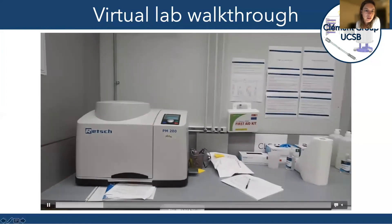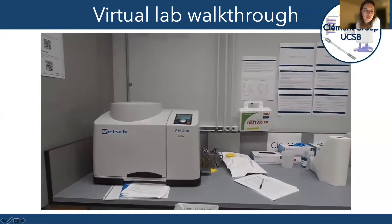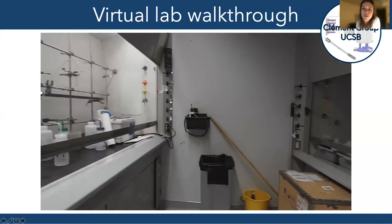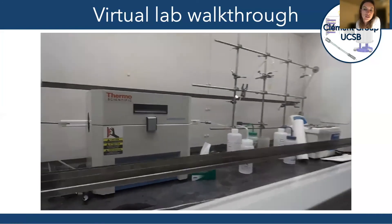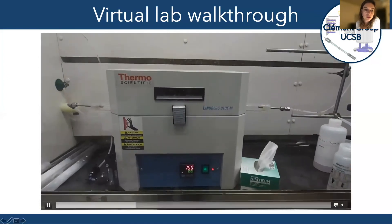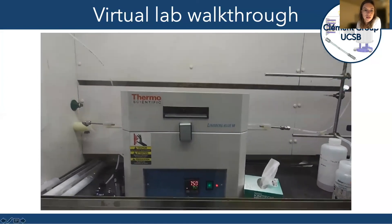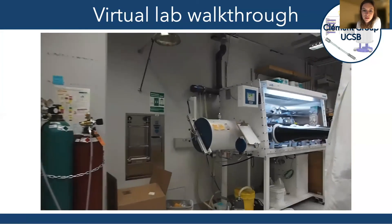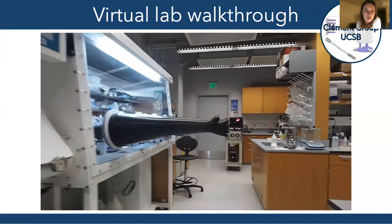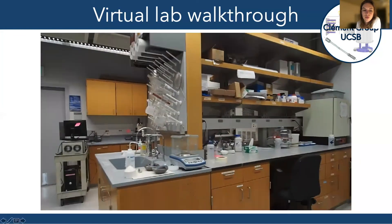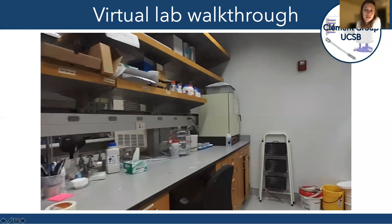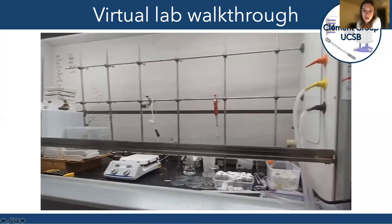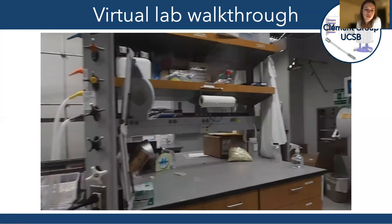Here we are entering the lab. As you can see here, this is one of the planetary ball mills that we use for the synthesis of metastable compounds such as solid electrolytes or electrodes. We also have a couple of furnaces in the lab — this is the medium temperature furnace. Because a lot of the materials that we synthesize and process are air sensitive or moisture sensitive, we have to handle these materials in a glove box to prevent air or moisture contamination.